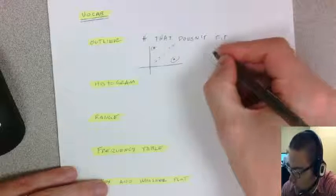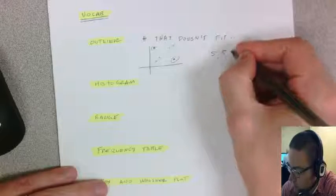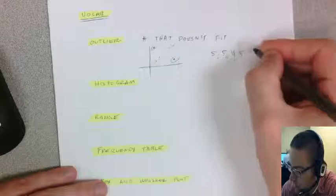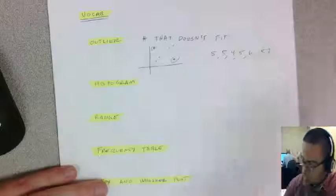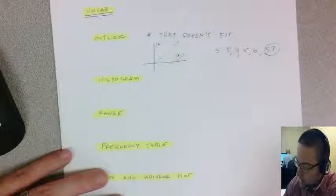So if you had a list of numbers like 5, 5, 4, 5, 6, and 57, you would call 57 an outlier in that list.